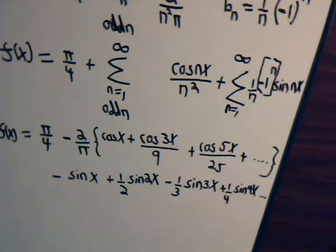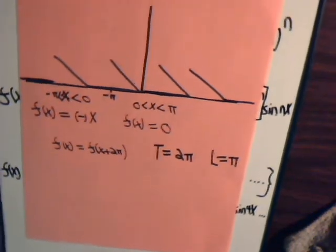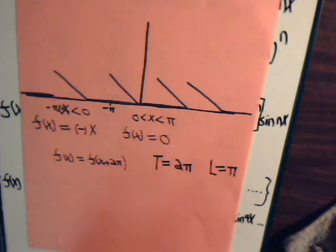So that is our first example here on the sawtooth type function. Now, in the next video, we're going to consider another very similar sawtooth type function. Only now, when we use the Fourier expansion, we're going to do it with the exponential Fourier expansion. Let's see what kind of expression that gives us. So, come back, join us for that video, and we'll continue on with more problems.